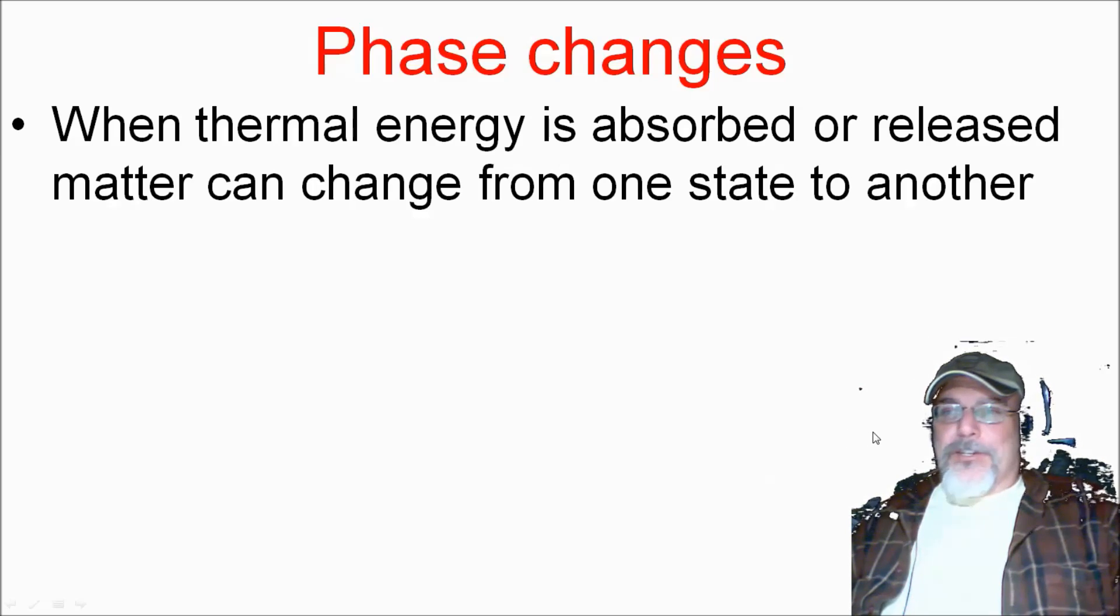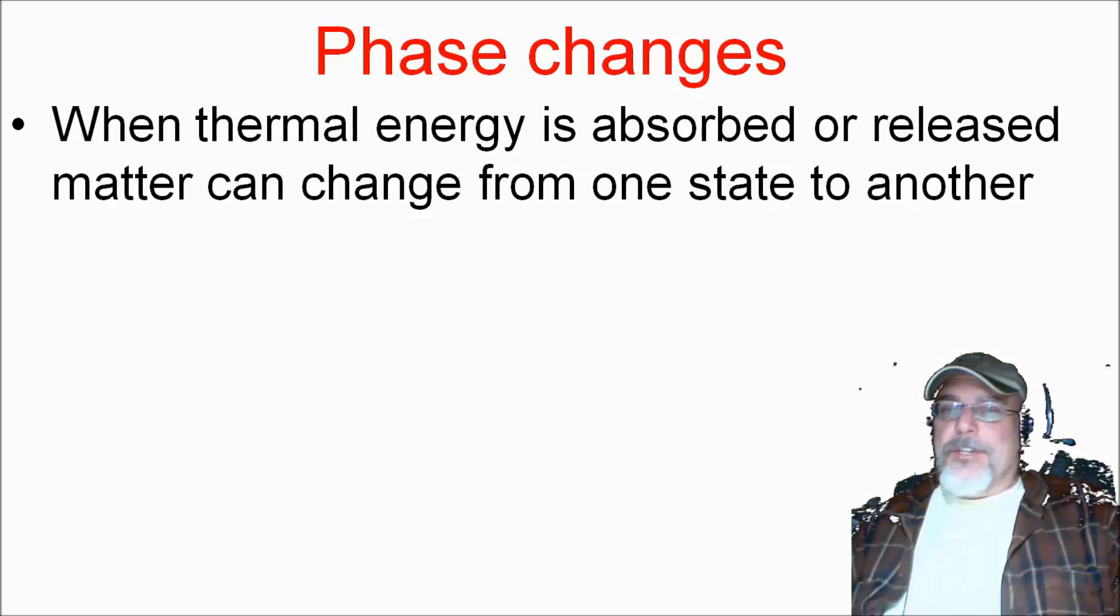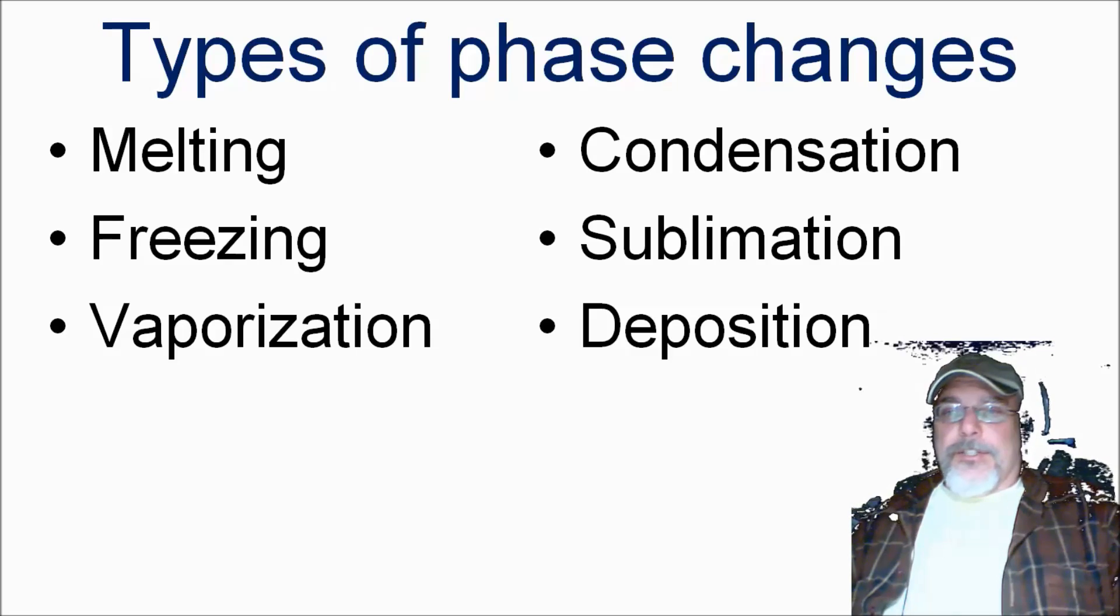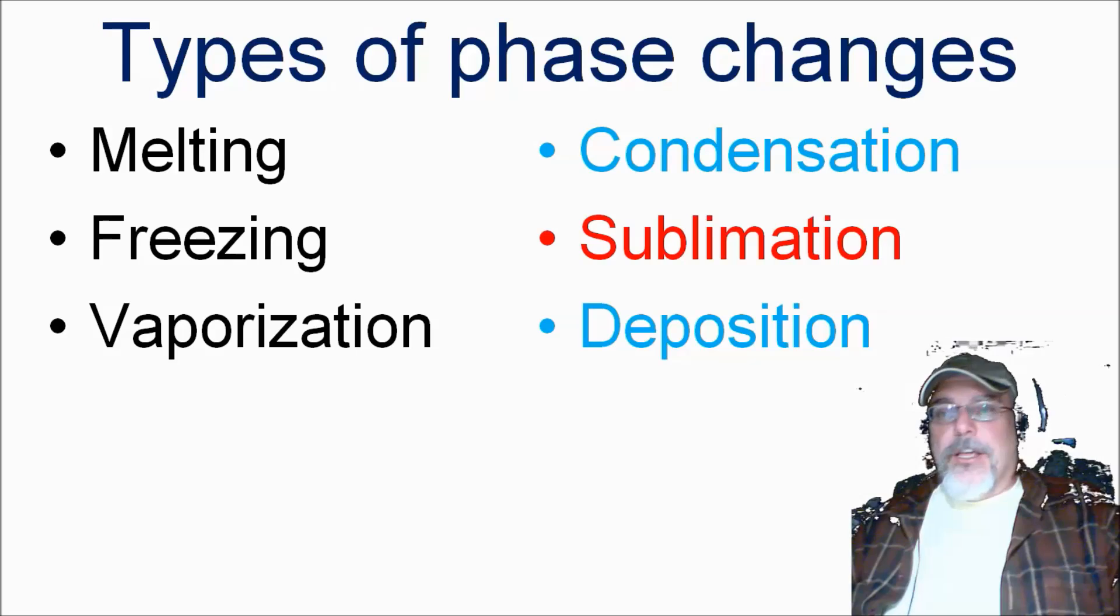Again, our phase changes depend on thermal energy, either being absorbed or released. Matter can change from one state to another. The six types of physical phase changes that we have studied in this unit are melting, freezing, vaporization, and we are going to focus on condensation, sublimation, and deposition.